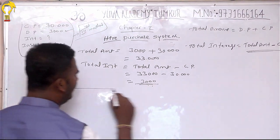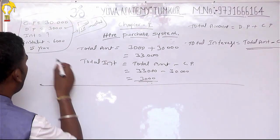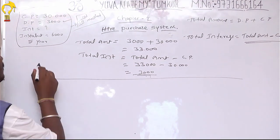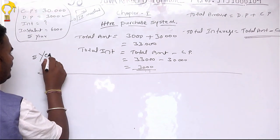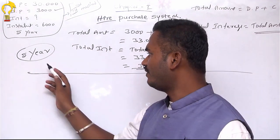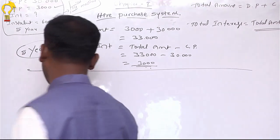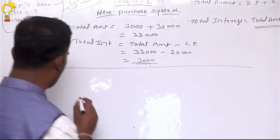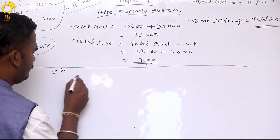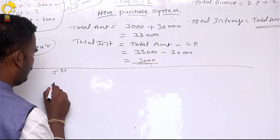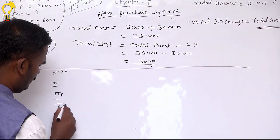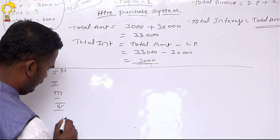Next again, total amount. At least, total amount — this is 5 years. So now we have 5 years. First, second, third, fourth, five.